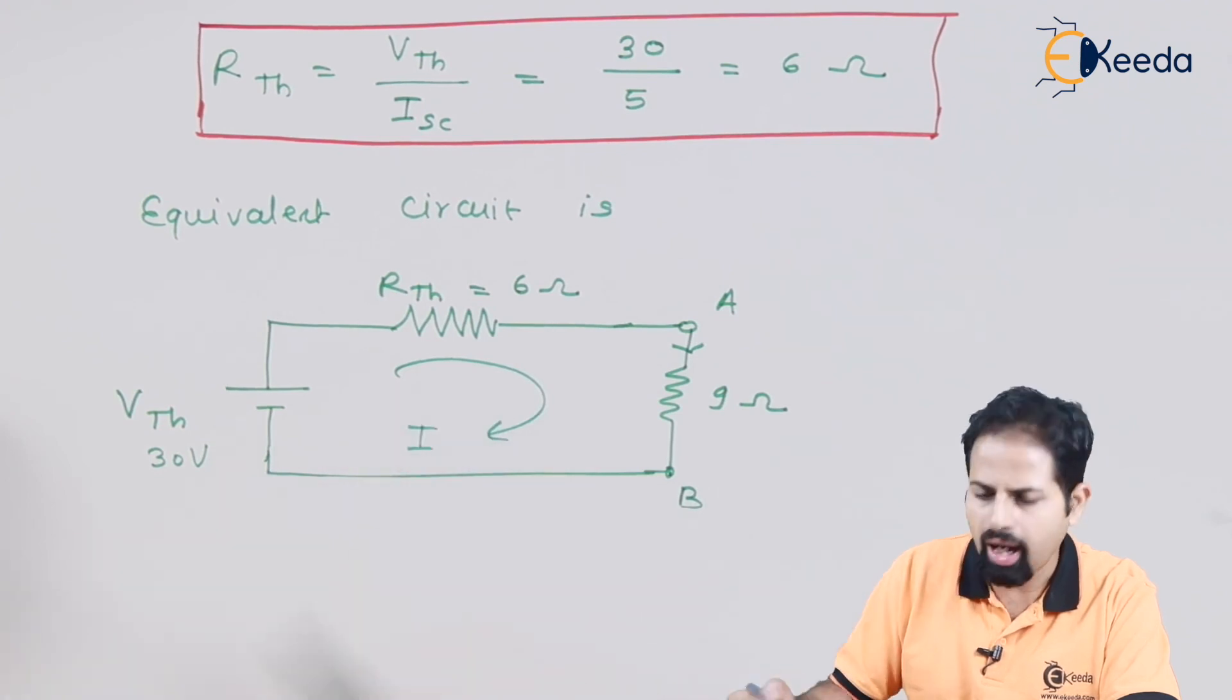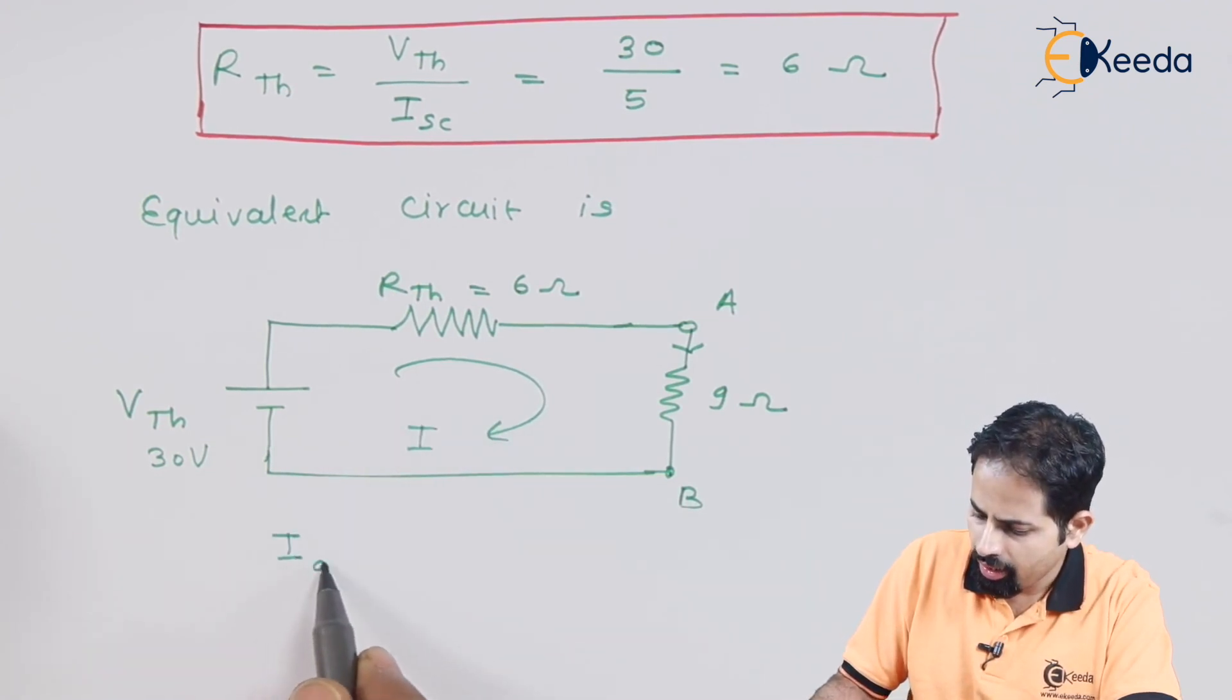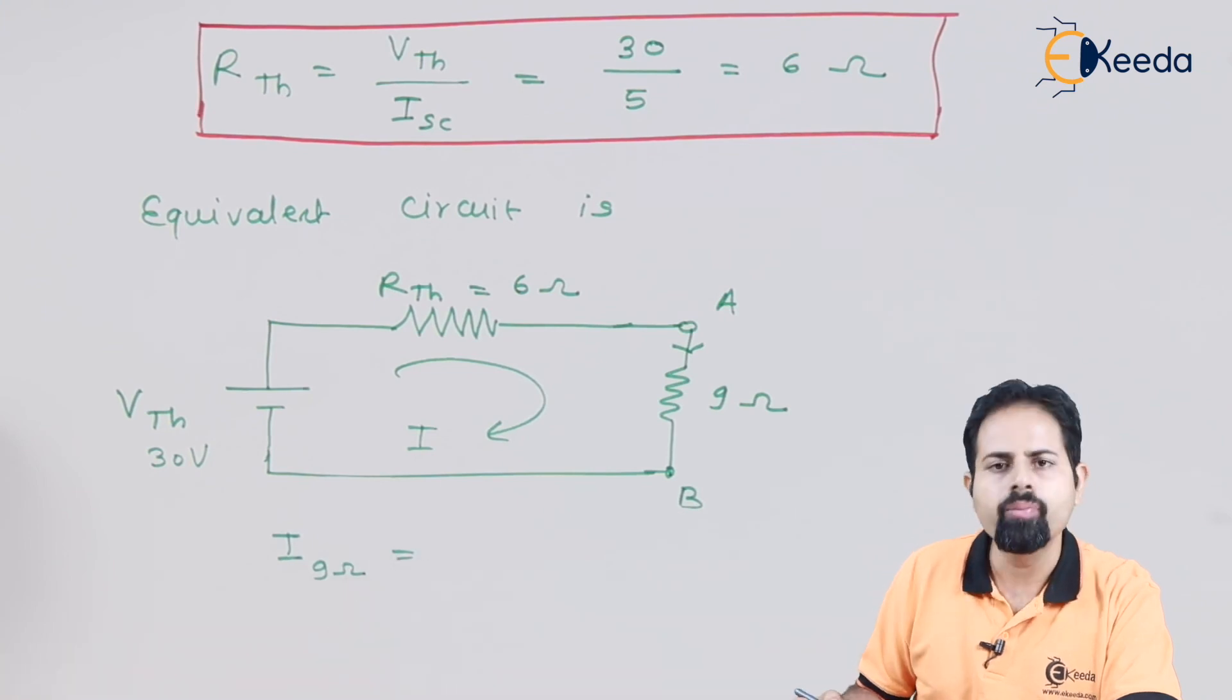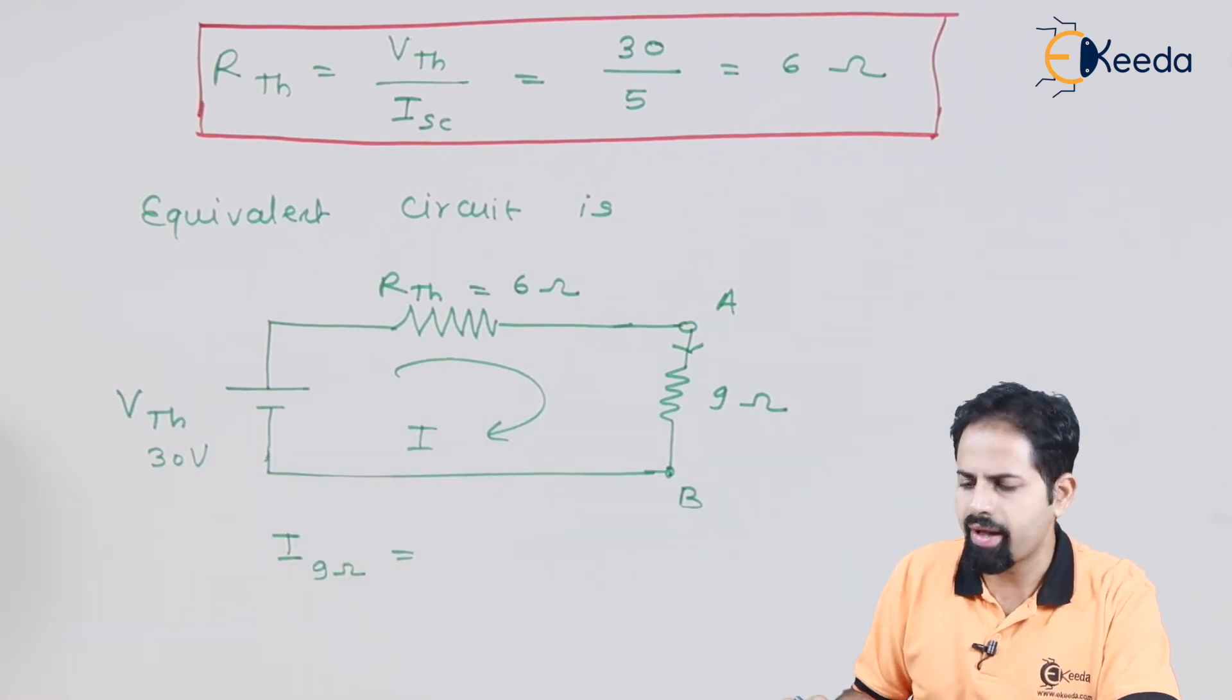It is called that current as I, or current I across 9 ohm. Current is voltage divided by total resistance.